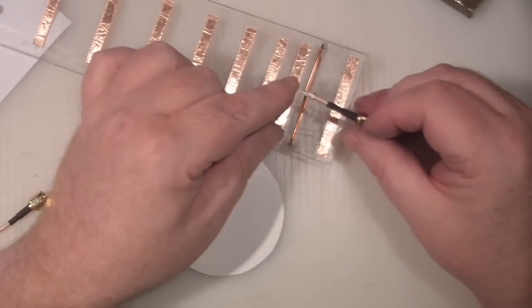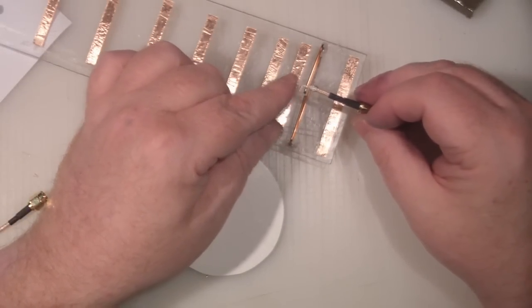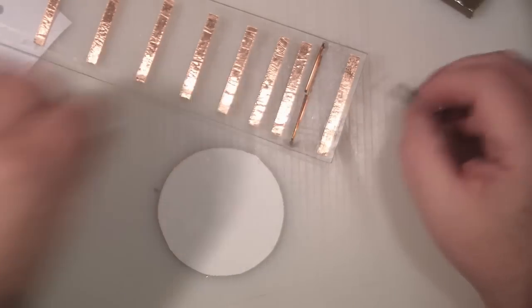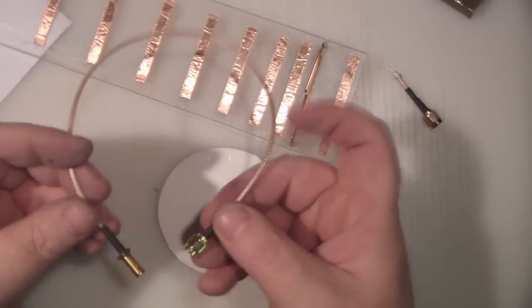And you want to trim the actual coaxial cable back so it's just long enough to make contact so we can solder it on to the driven element here. These SMA connectors, you can get these for a couple of pounds off eBay.